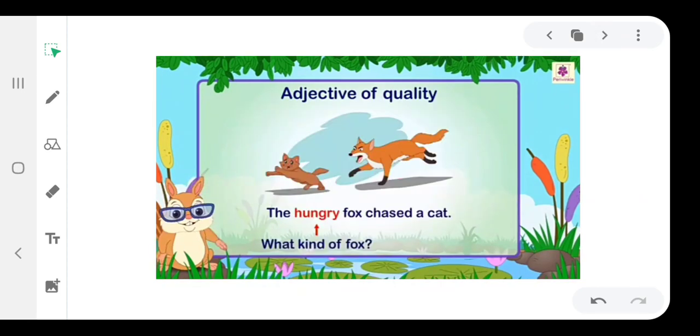Adjective of quality. An adjective of quality answers the question 'What kind?' For example, the hungry fox chased a cat. Hungry answers the question 'What kind of fox?'